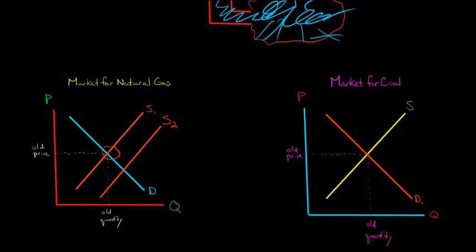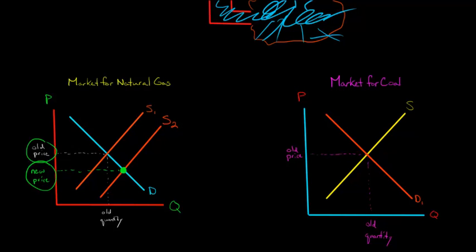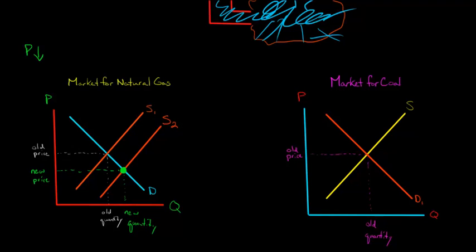Previously, our equilibrium was here — our old price and our old quantity of natural gas were at that point. But now the equilibrium has shifted to where supply curve S2 intersects with the demand curve. If we extrapolate this out, we see our new price is lower than our old price, so the price of natural gas is going to go down. And our new quantity is higher, so there's going to be a higher quantity of natural gas being produced and consumed in the market.